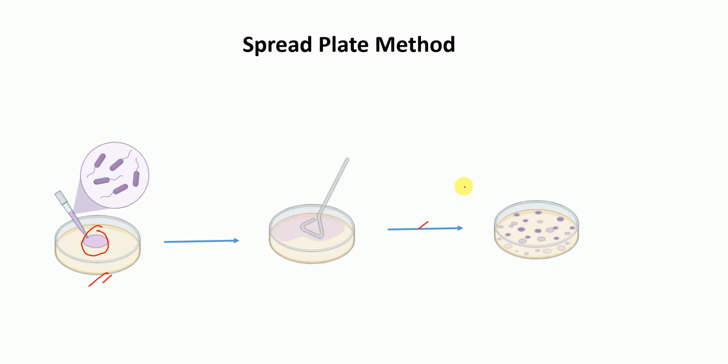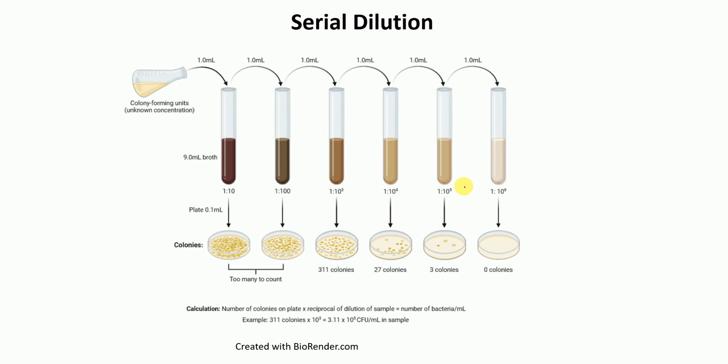Serial dilution is used to determine the number of colony forming units per ml. In serial dilution, we start with a bacterial stock. We put 9 ml of broth in all tubes. Then from the original stock, we take 1 ml and add it to tube number 1 which already has 9 ml of broth, giving a dilution of 1 to 10.